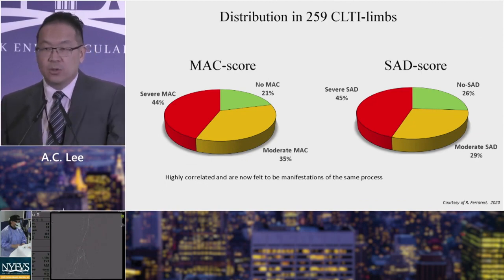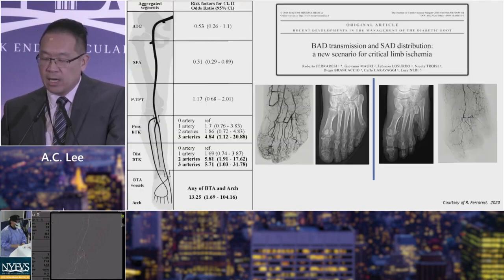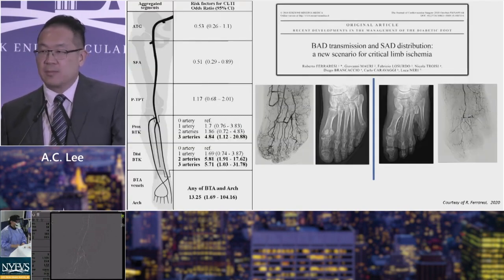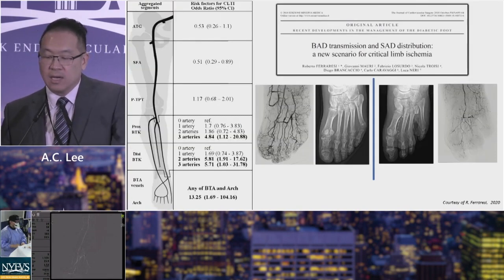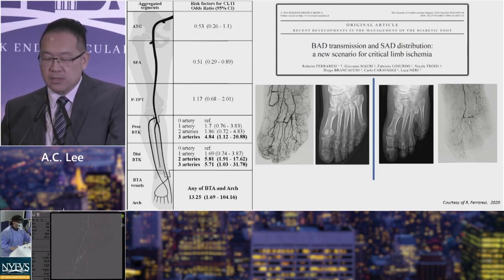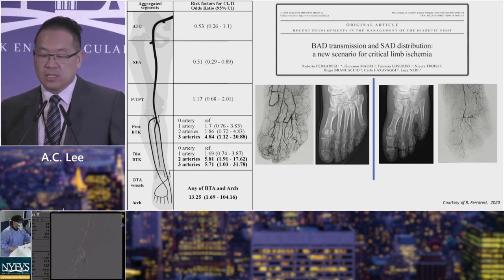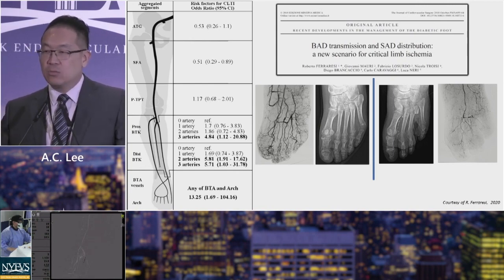MAC scores and SAD scores in a study by Dr. Farise showed very good correlation, leading to the conclusion that this is really the same disease process. It is important because when you look at the odds ratio for having critical limb ischemia, one of the most powerful predictors is any below-ankle or arch disease.